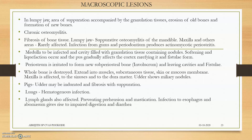The macroscopic lesions will be suppurative osteomyelitis and chronic osteomyelitis, fibrosis of the bone tissue. Suppurative osteomyelitis of the mandible is mainly happening and it can also lead to acneomyelitis periosteitis. The maxilla and mandible will both be affected, but other areas are rare — infection is mainly seen in the head region. The periosteum is irritated to form new subperiosteal bone. Under the periosteum, due to disturbance by the bacteria, new subperiosteal bone will be formed — that is chronic hyperproliferation of osteocytes leading to new bone formation, called involucrum.